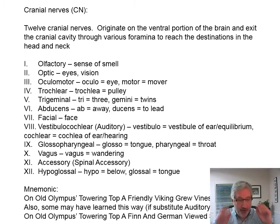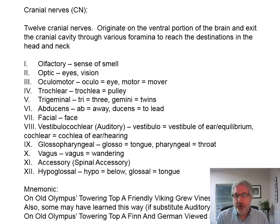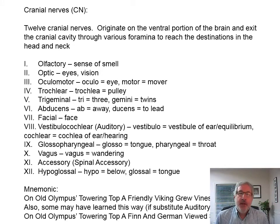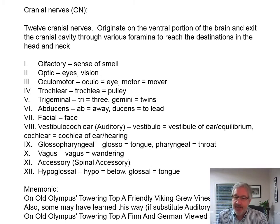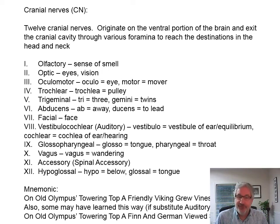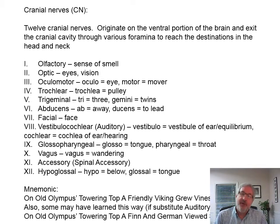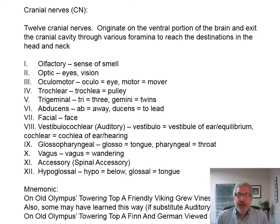There are 12 cranial nerves. They originate on the ventral portion of the brain — they come out the bottom side. They exit the cranial cavity through the various foramina to reach destinations in the head and neck. You have to have holes in the skull for these nerves to get out, since the nerves are soft tissue and you need those foramina for the nerves to exit.